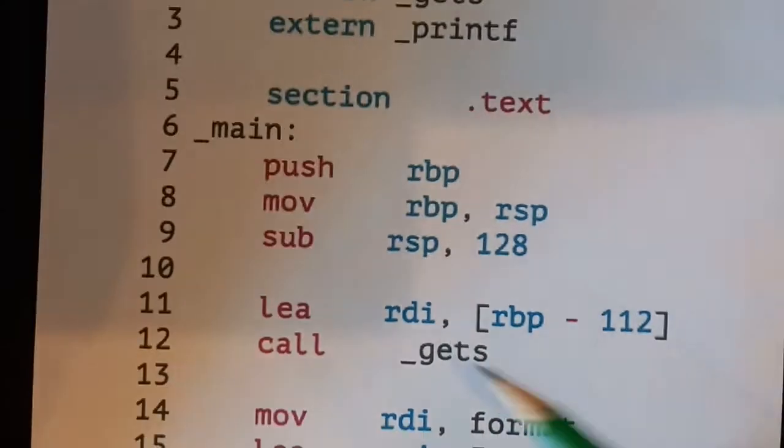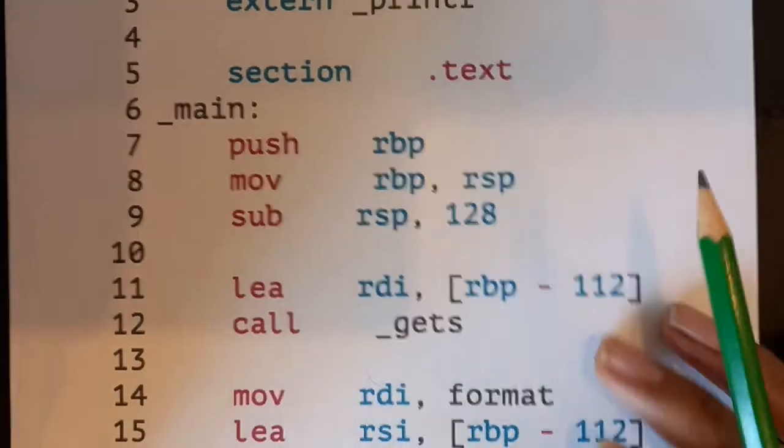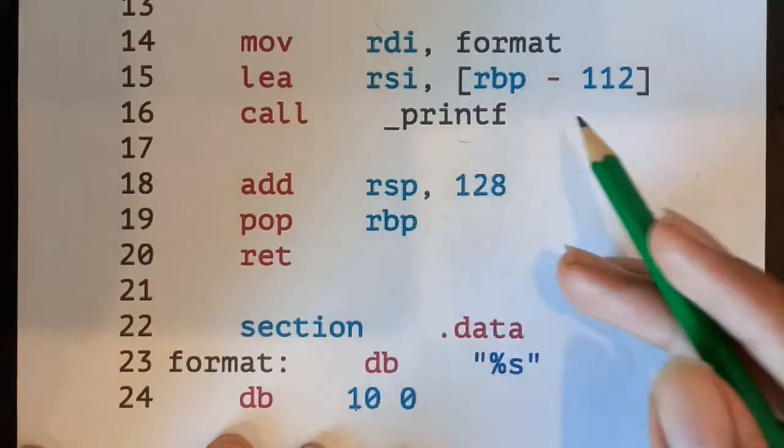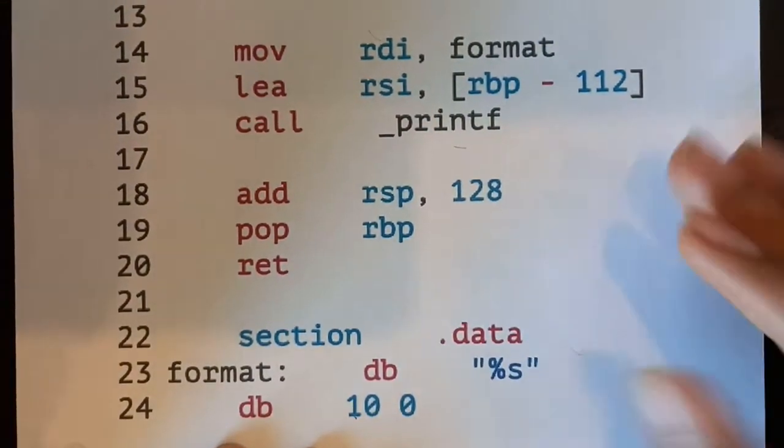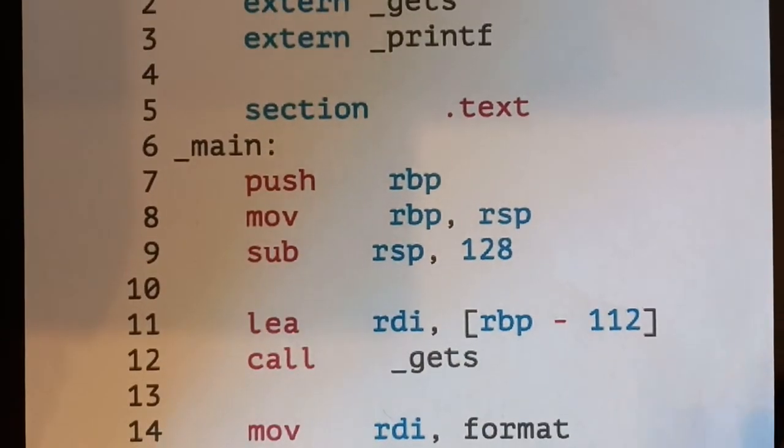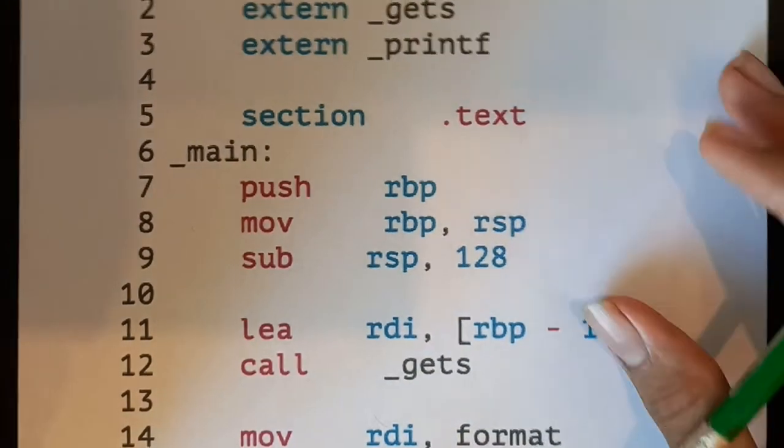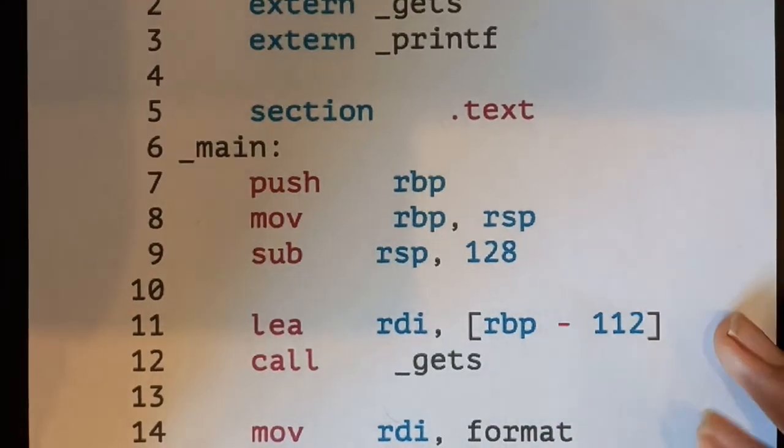I'm just using gets to take in a line of user input, and then I'm just taking this format string and printing out whatever the user typed in. So it's a very simple program. But you shouldn't really focus on the printf stuff because we've already covered that. I mostly here want to focus on how we allocate the array on the stack.